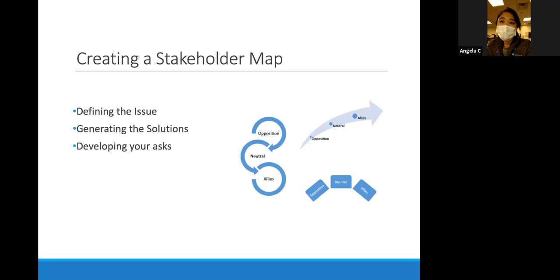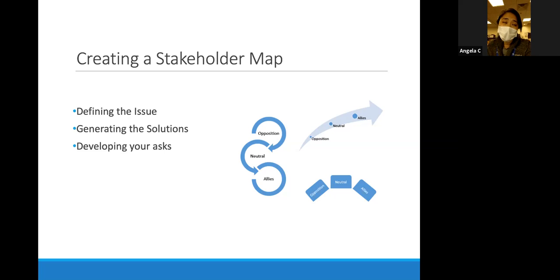The key components of doing a stakeholder map include defining your ask or defining the issue, then identifying different potential stakeholders, and determining the levers of influence. It's an interactive group activity that can be used specifically with our module for interpreters, or if your group already has a specific issue in mind, you can modify it as you see fit.